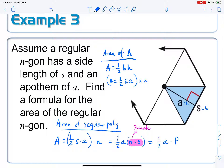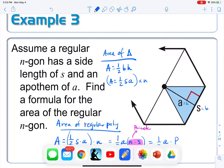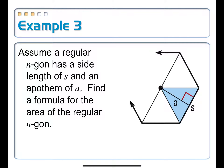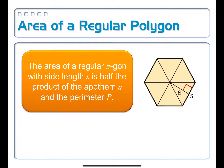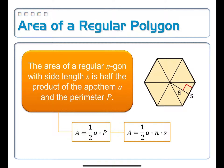And there you have it — the formula for the area of a regular n-gon. The area equals one half times a times p, where a is the apothem length and p is the perimeter. Since p equals n times s, you can also write it as one half times a times n times s.